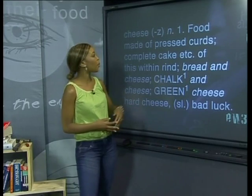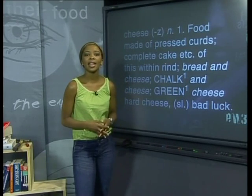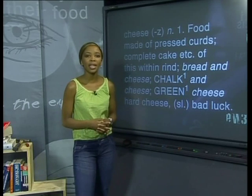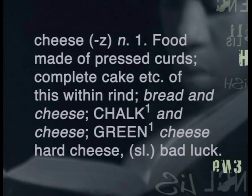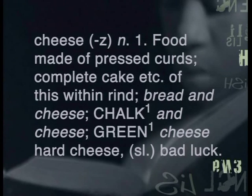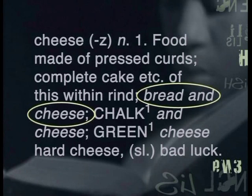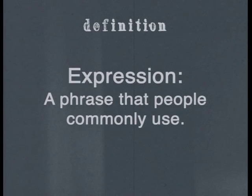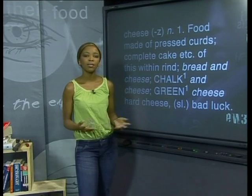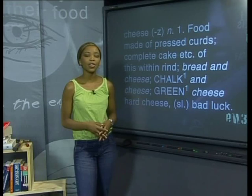Back to our word cheese. Now that we know it is a noun and that it is pronounced 'cheese', we are now ready to see what the word cheese actually means. The first meaning is: a food made of pressed curds, a complete cake of this within rind. The little one lets us know that there is more than one meaning. The dictionary then shows 'bread and cheese' in italics because it is an expression — a phrase that people commonly use, such as 'I am just having bread and cheese for lunch'.